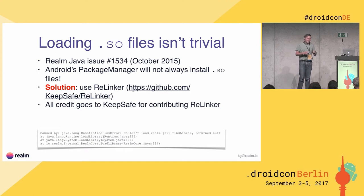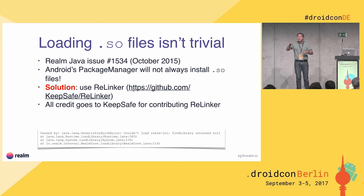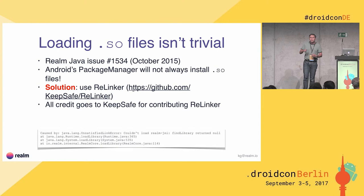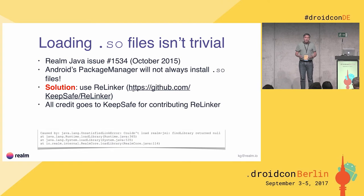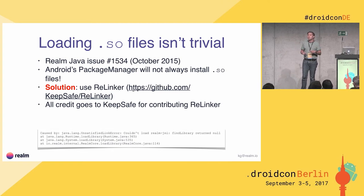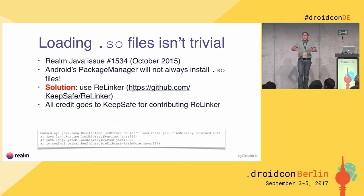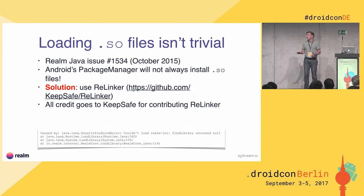Our solution is that we use Relinker, done by KeepSafe. You can see the error as an UnsatisfiedLinkError. When you see that, something went wrong with the SO file — just use Relinker. It solves most of the cases. What Relinker actually does is: if it cannot find the SO file, it finds the APK file, unzips it, finds the SO file in the unzipped content, copies it, and loads it — it actually redoes the installation. Facebook's approach is even more complex: they load the SO file from one of their servers. Just use Relinker if you are doing native code.